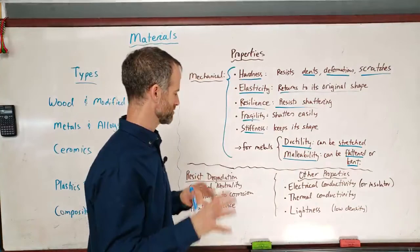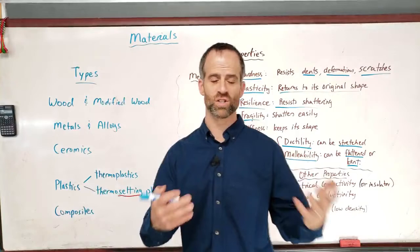Resistance to corrosion. Well, for example, plastic does not corrode. It is extremely resistant to corrosion. Metals, there are certain metals that resist it better or worse.